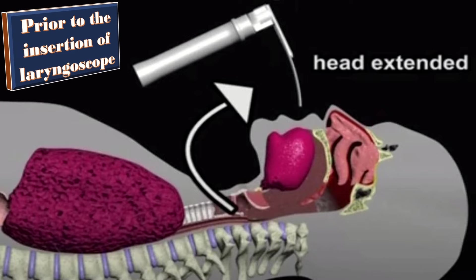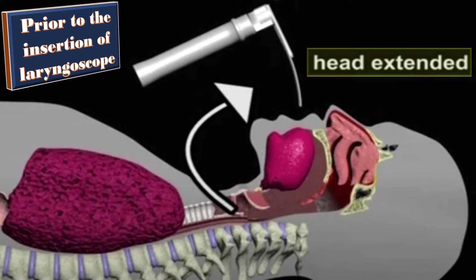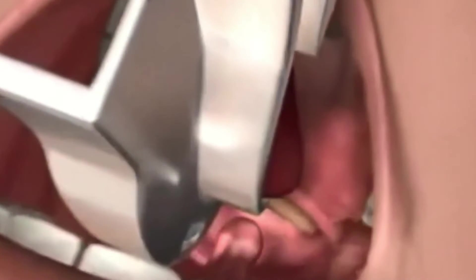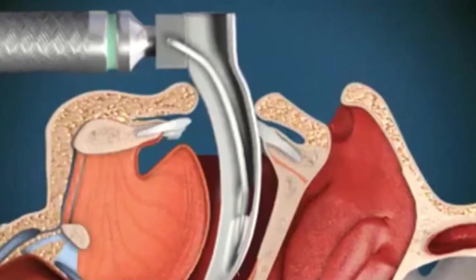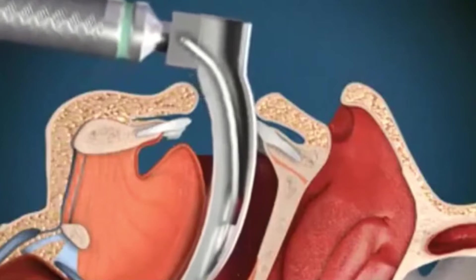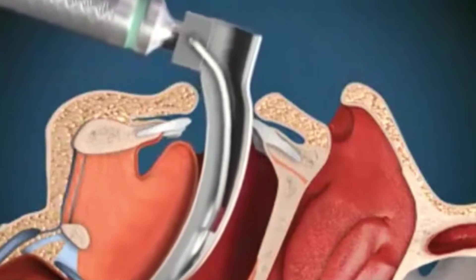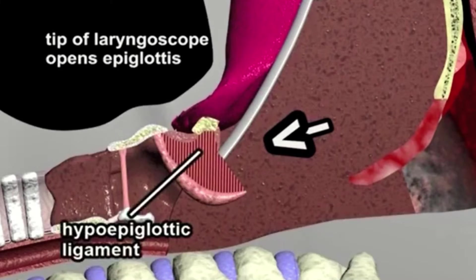Prior to the insertion of the laryngoscope, the head of the patient is extended slightly at the cervical spine level. Push the chin upward to reduce the angle between the oropharynx and the upper airway. Advance the laryngoscope slightly until the tip of the epiglottis can be seen posterior to the tongue. Advance the tip of the laryngoscope blade into the vallecula between the epiglottis and the tongue, then press the blade to lift the tongue.